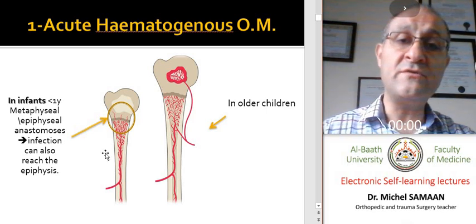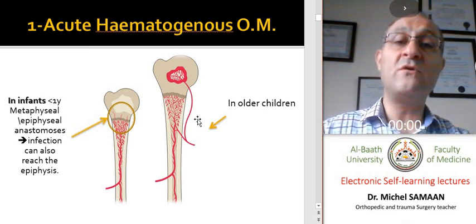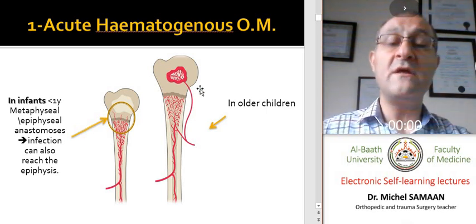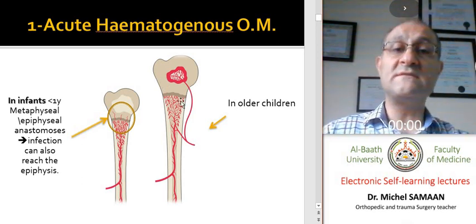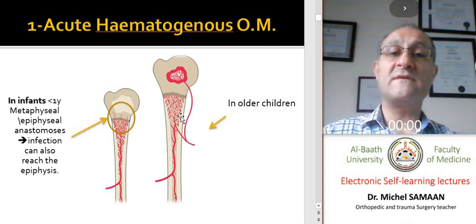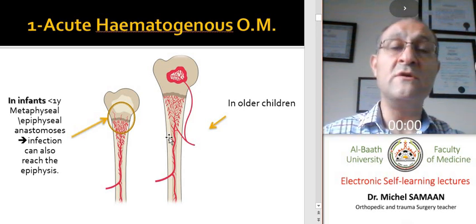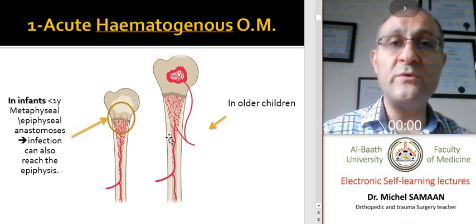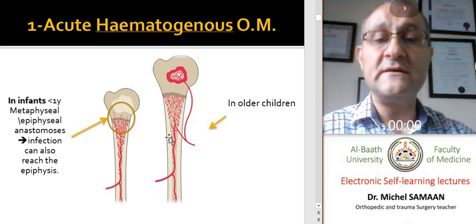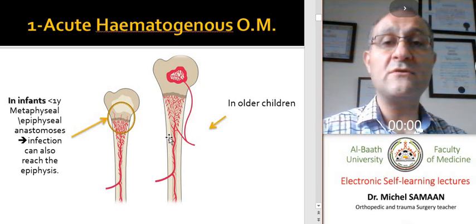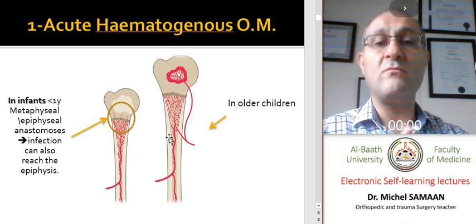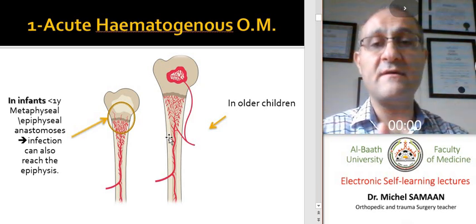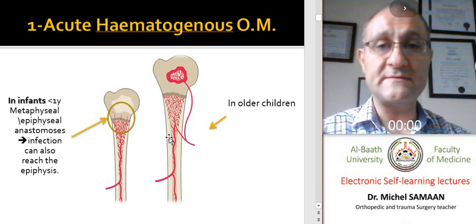But in older children, the blood supply of the epiphyseal region is different and it's separated from the vascular supply to the metaphyseal region. So usually we do not have a simultaneous or co-existent infection of septic arthritis with osteomyelitis.